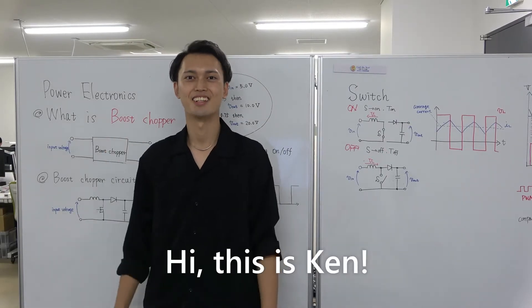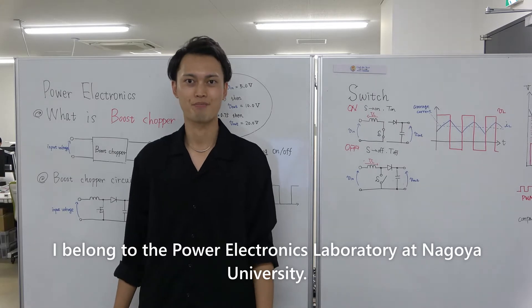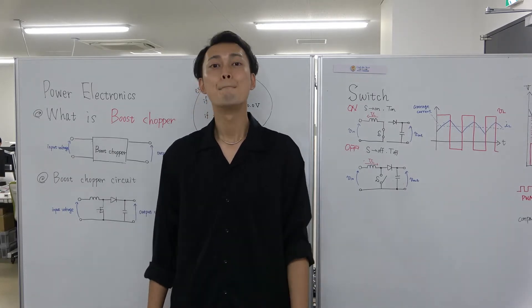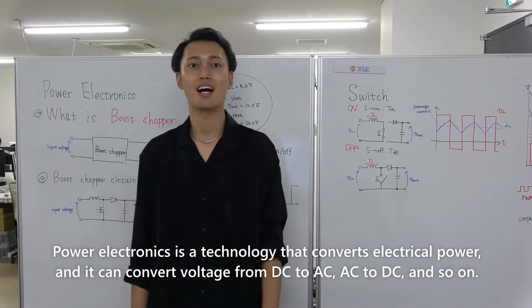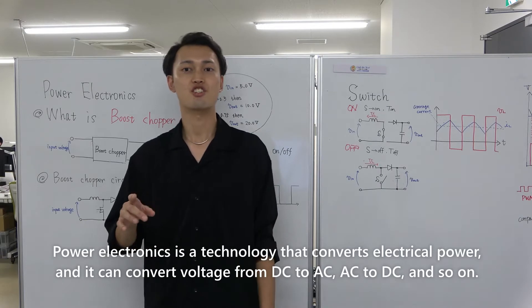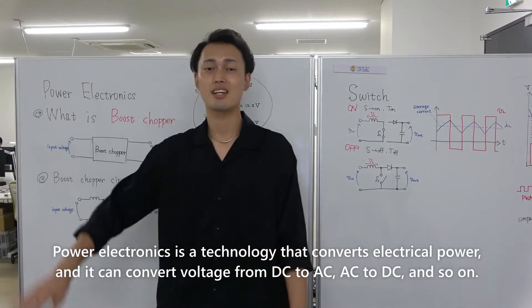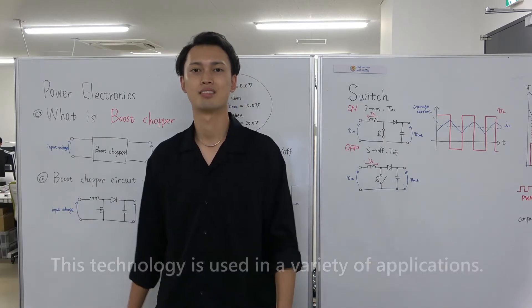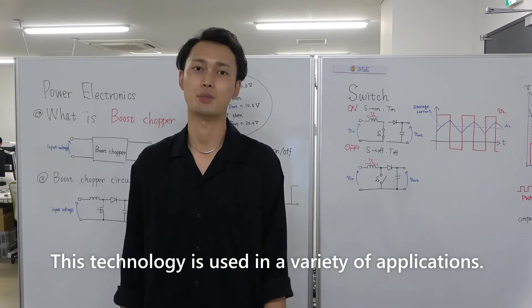Power Electronics Laboratory. Hi, this is Ken. I belong to the Power Electronics Laboratory at Nagoya University. Power electronics is a technology that converts electronic power, and it can convert voltage from DC to AC, AC to DC, and so on. This technology is used in a variety of applications.